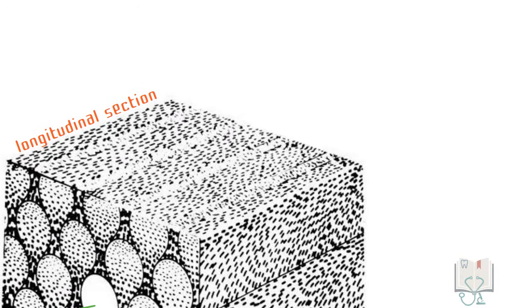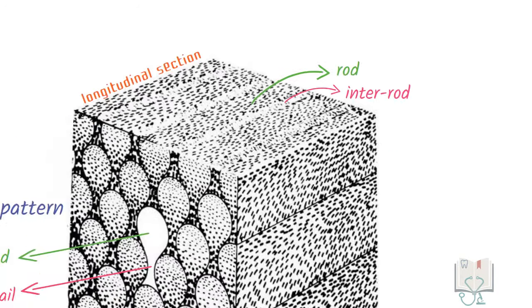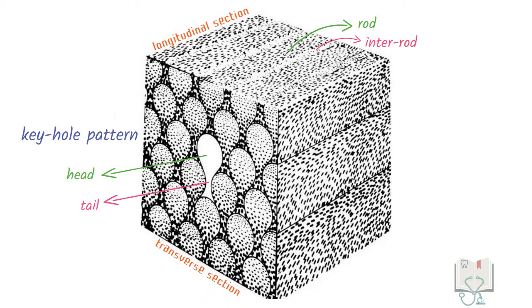Whereas in longitudinal section, the same rods give the rod and inter-rod appearance. That is, in transverse section, the head part is called rod in longitudinal section and in transverse section, the tail part is called inter-rod in longitudinal section.